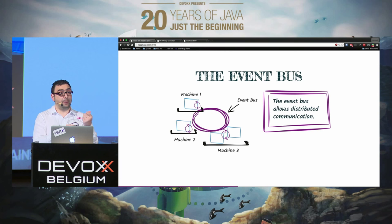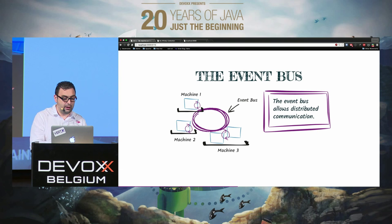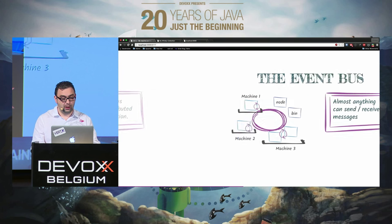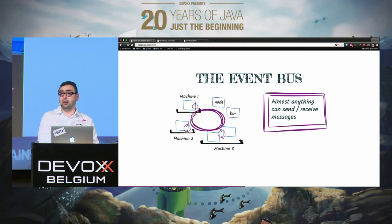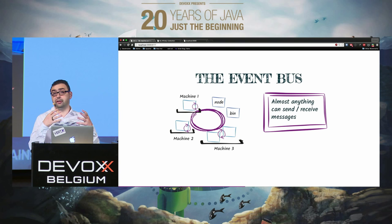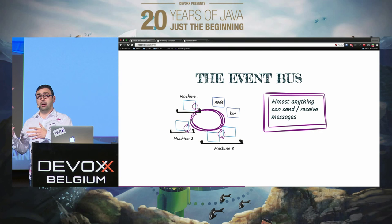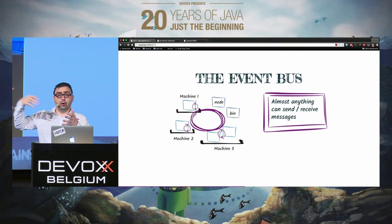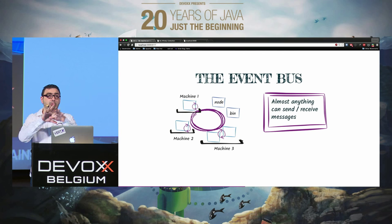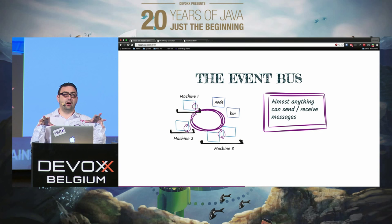In Vert.x 3.1, we went further by providing the concept of bridges — so not only Vert.x apps can interact with the event bus, but also Node applications, binary applications, and anything else. We provide bridges for SockJS, TCP, STOMP, AMQP, and more. It's a bidirectional bridge: events arriving from outside are mapped to the event bus, and event bus messages going out are transformed and sent.